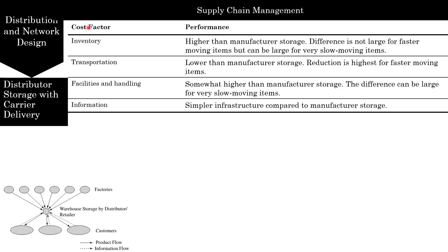Inventory costs are definitely higher than manufacturer storage, though the difference is not large for fast-moving goods but can be very large for slow-moving items. Amazon and WW Grainger stock only slow-to-fast moving items at their warehouses, with very slow-moving items stocked further upstream. Postponement of product differentiation can be implemented with distributor storage but requires that the warehouse develops some assembly capability. Distributor storage requires less inventory than a retail network — Amazon achieves 10 inventory turns annually using warehouse storage, whereas Barnes and Noble achieves about three turns using retail stores.